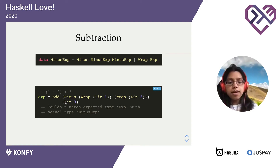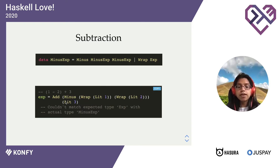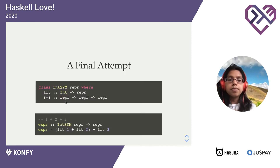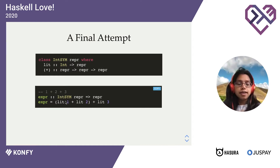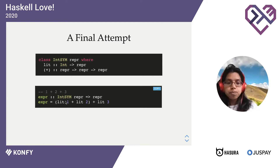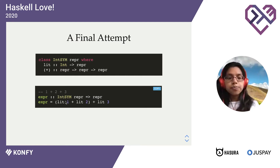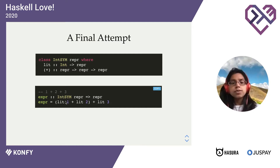Now there are ways of getting around this. We could, for example, encode our data type as fixed points, and that would produce a very interesting structure. But instead, what we're going to try and do is explore a different approach. We're going to encode our data type as a type class, and our interpreters are just going to be instances of that type class.